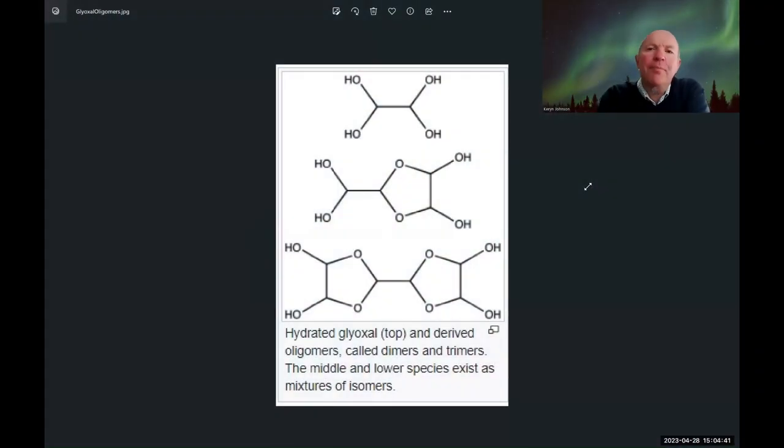This is the structure of glyoxyl. It's a hydrated molecule with four OH groups, and we can see that it can actually form a range of oligomers, dimers, and trimers.